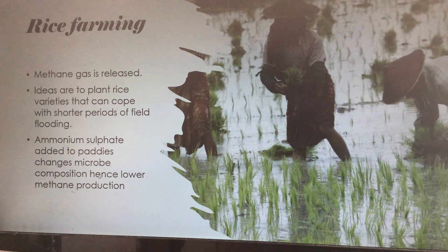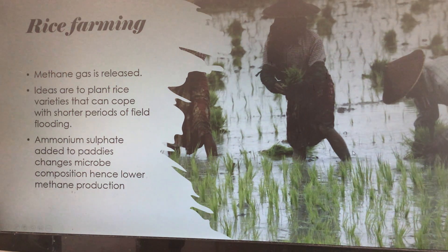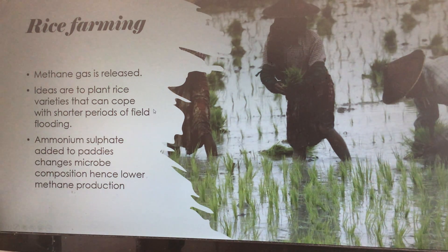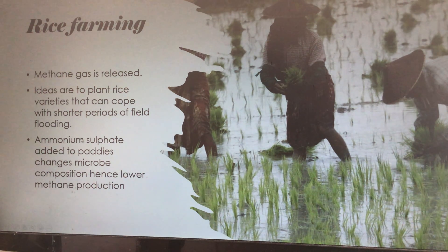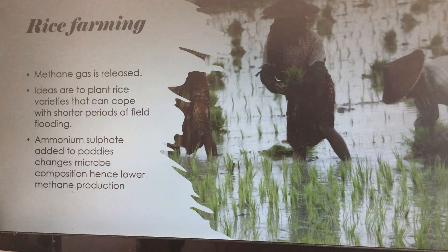The next one is rice farming. You're not going to be able to do rice farming without a phase where the field is flooded — that's the nature of rice, particularly during the first phases. However, if you've got a rice plant that is a bit more tolerant to drought, you can maybe drain the fields a bit earlier and reduce the phase where stagnant water causes methane-producing bacteria to live and thrive. Using ammonium sulfate to change the microbiome is an option, though it's a cost issue — poorer countries growing rice may not want to spend extra money on it.